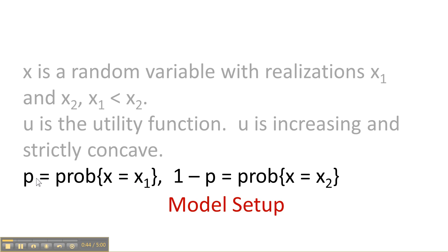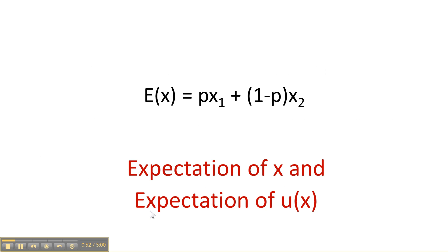P is the probability of getting x1. 1 minus P is the probability of x2. So that's the setup. We have to understand mathematical expectation. The mathematical expectation is a weighted average of the outcomes weighted by the probability. So that's the expectation of x and that's the expectation of u of x.